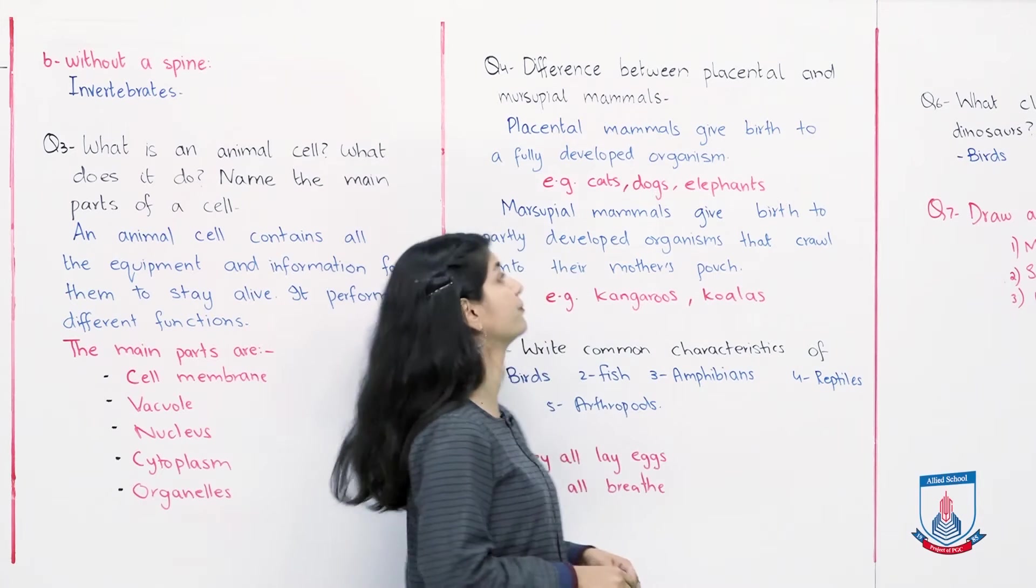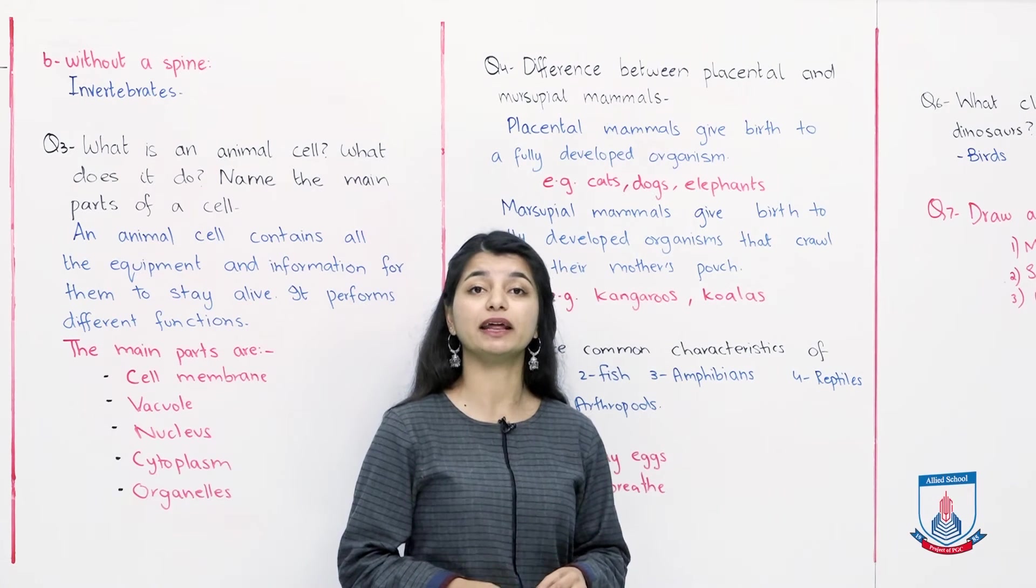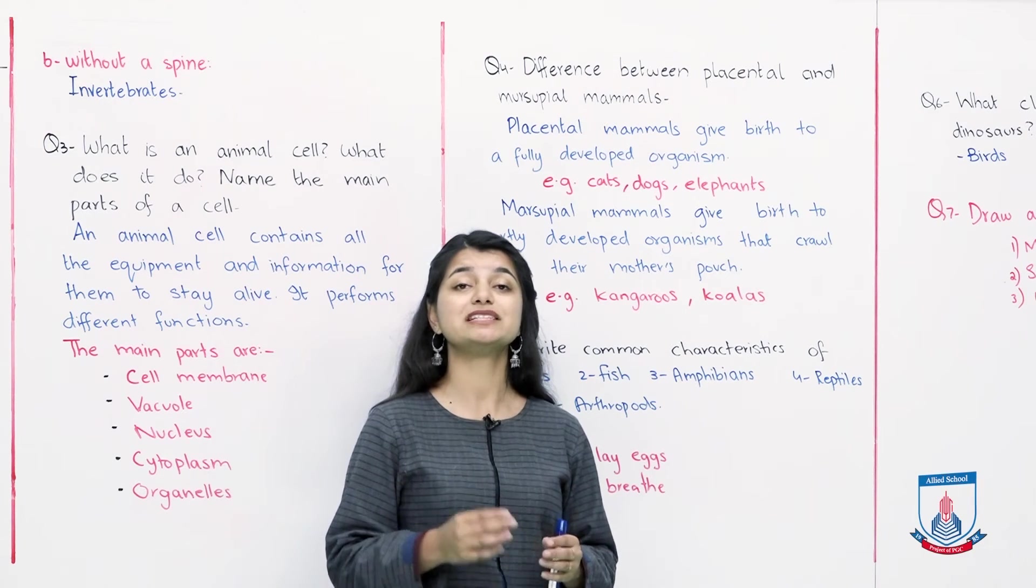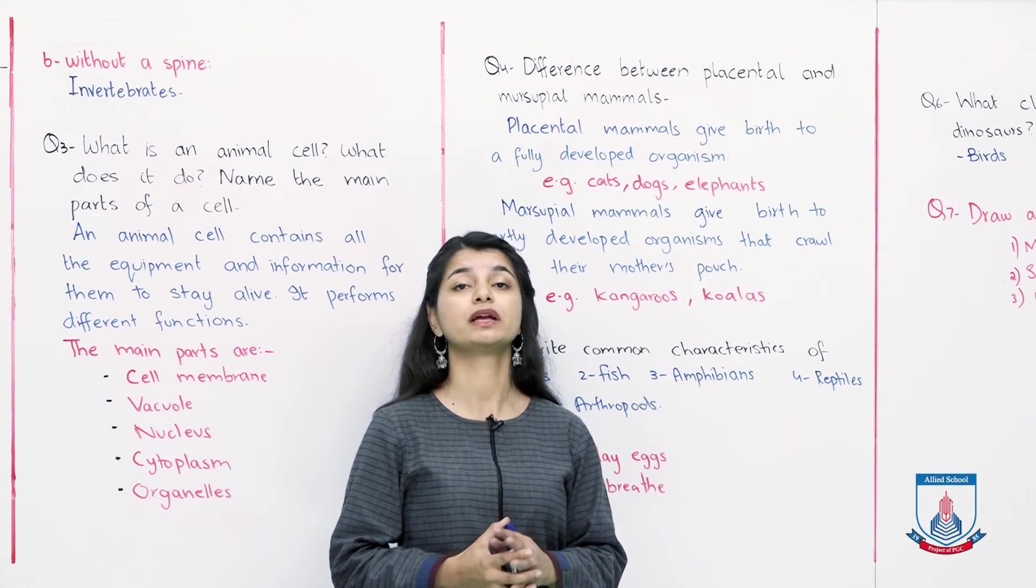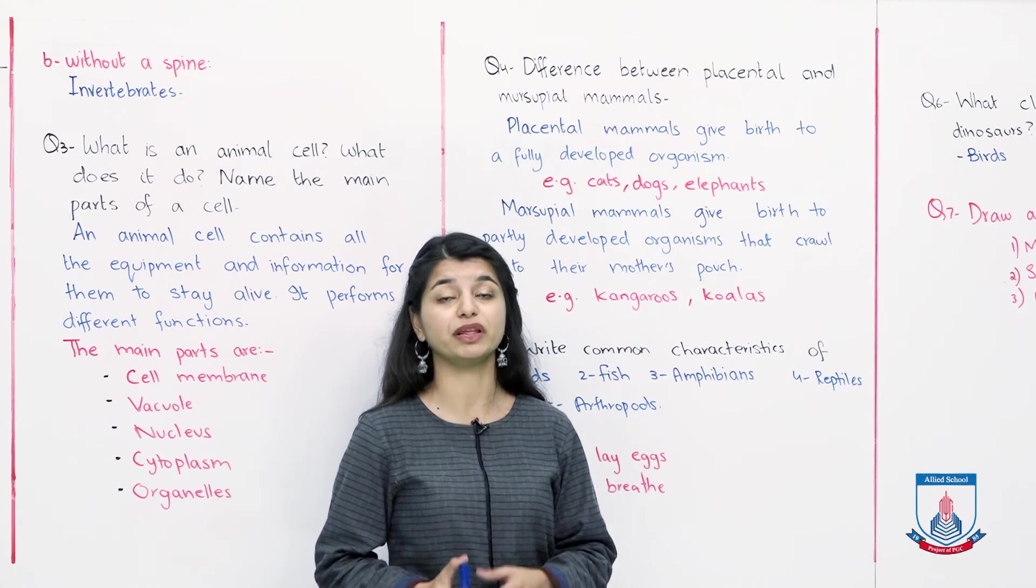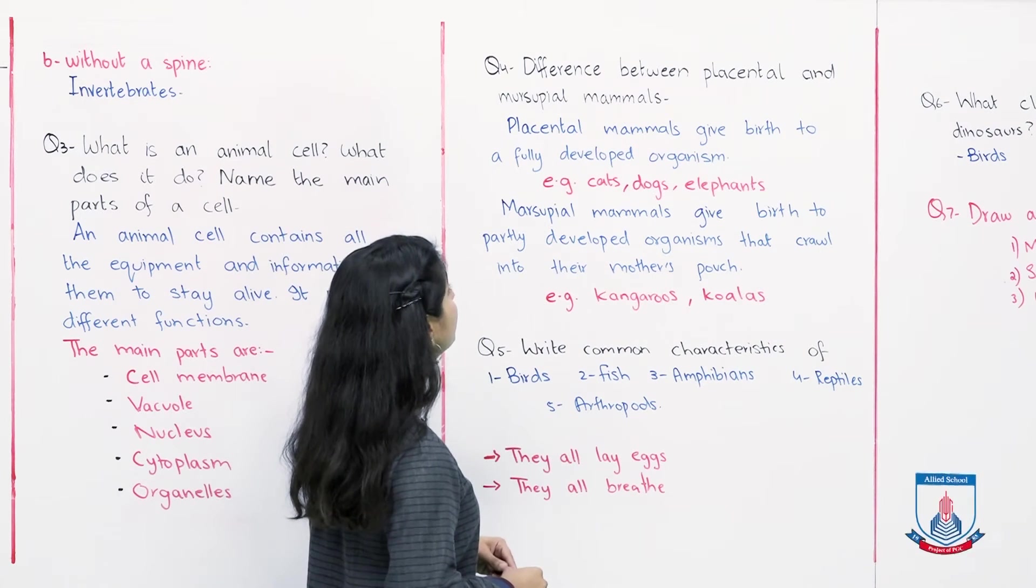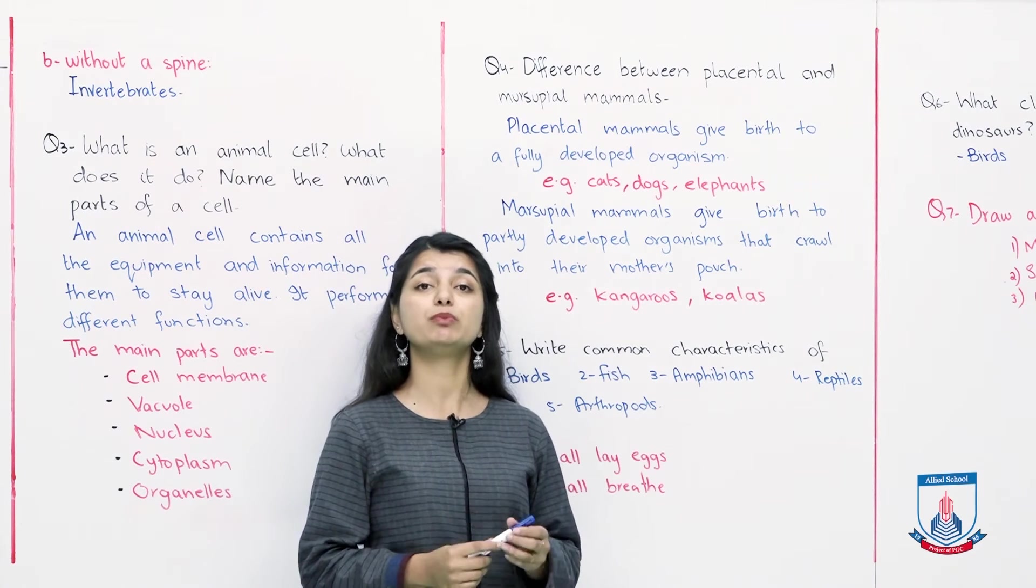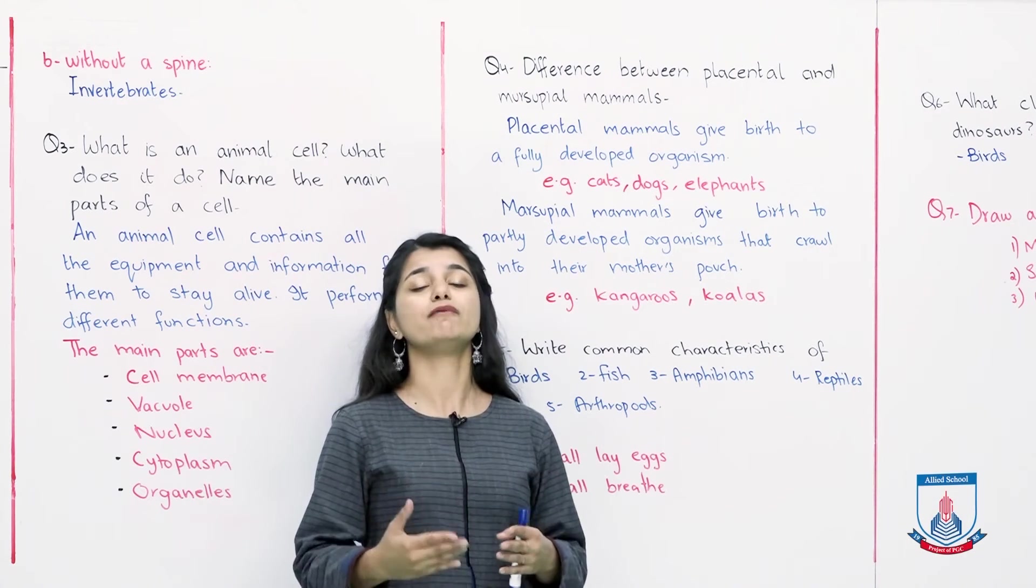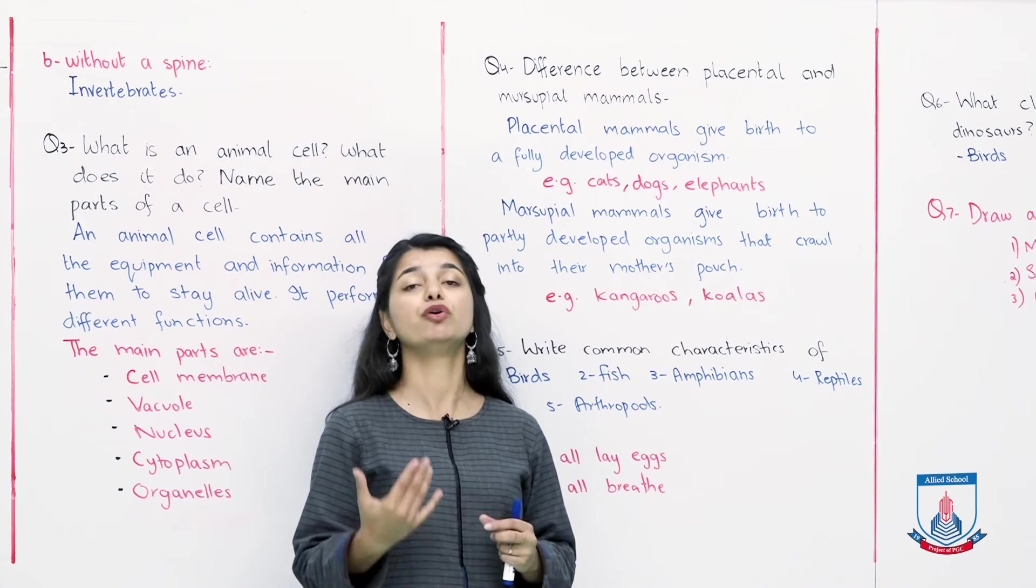Question number 4: What is the difference between placental and marsupial animals? So what do you need to do? You have to tell the difference between placental and marsupial mammals. We have learned that there are 3 different types. In this type there is a third type, monotremes, which they have not asked you about. They are simply asking you what are the differences between marsupial mammals and placental mammals. Placental mammals give birth to a fully developed organism.